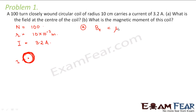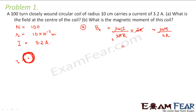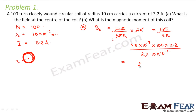The magnetic field at the center of the coil is given by μ₀i/4πr multiplied by the angle subtended at the center, which is 2π. This simplifies to μ₀i/2r. Since there are n turns, this becomes μ₀nI/2r. Here μ₀ = 4π × 10⁻⁷, n = 100, I = 3.2 amperes, and r = 10 × 10⁻² meters. The magnetic field at the center comes out to be 2 × 10⁻³ tesla.